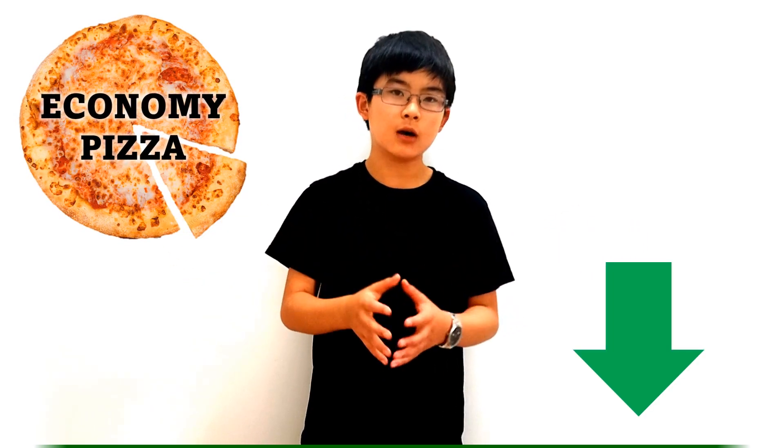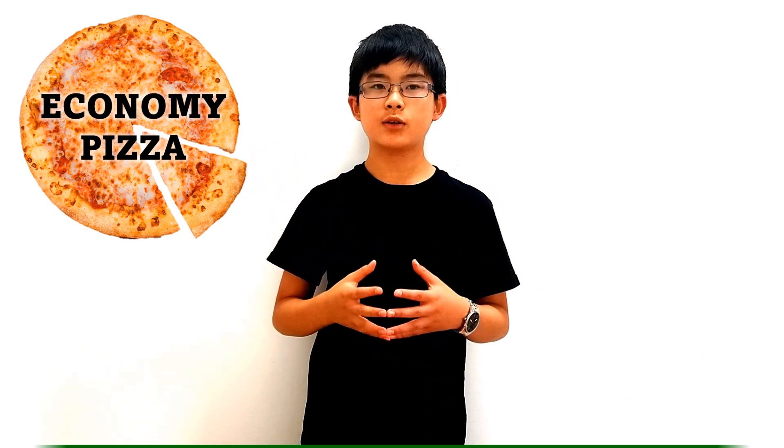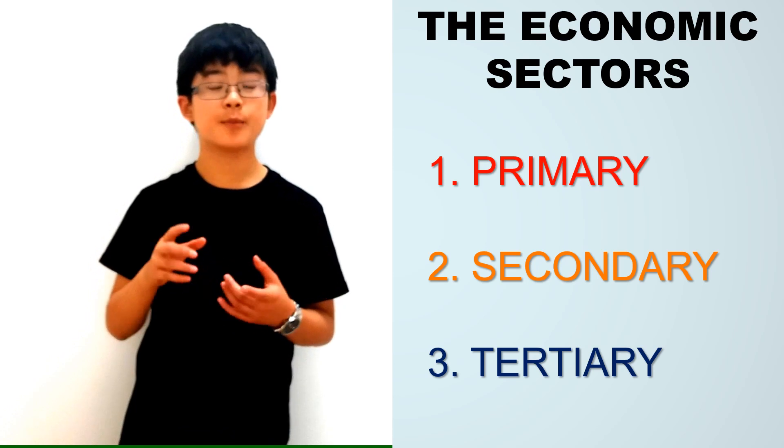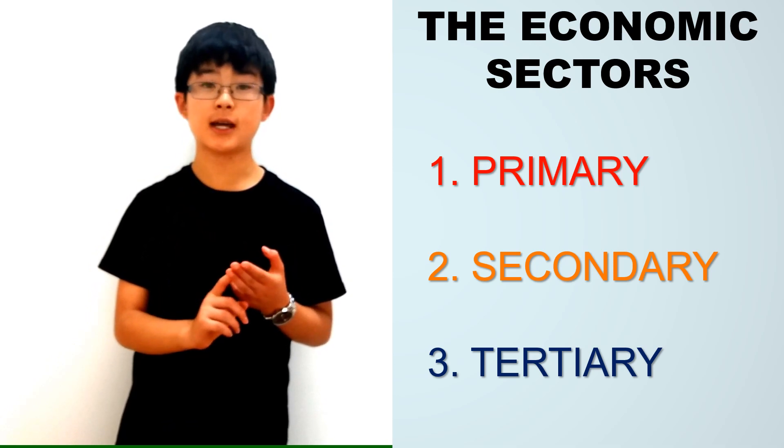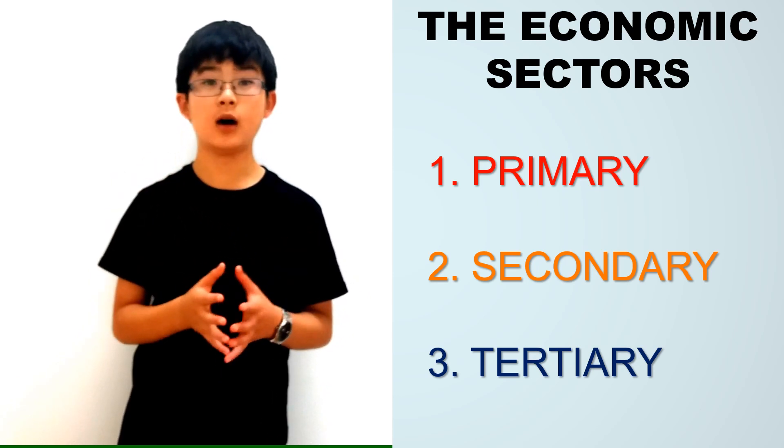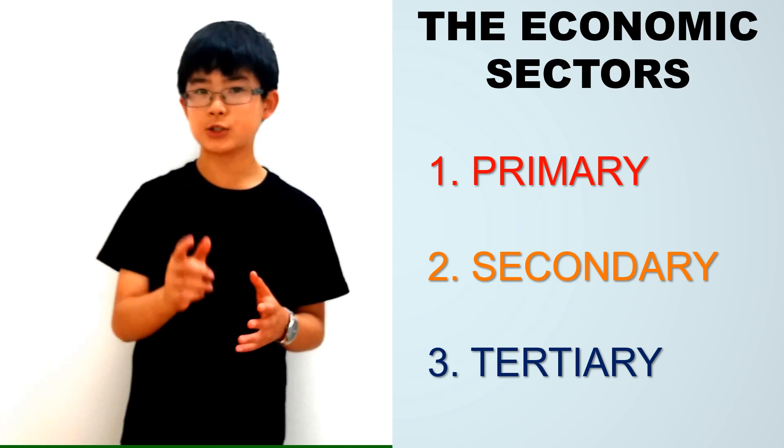Let's start by defining what an economic sector is. Think of it as a big economy pizza. What do you like on your pizza? Comment below. But there are some certain things on this economy pizza, which we will get to later. You can think of each sector as a slice of this pizza. There are three main economic sectors: the primary, the secondary, and the tertiary sector.